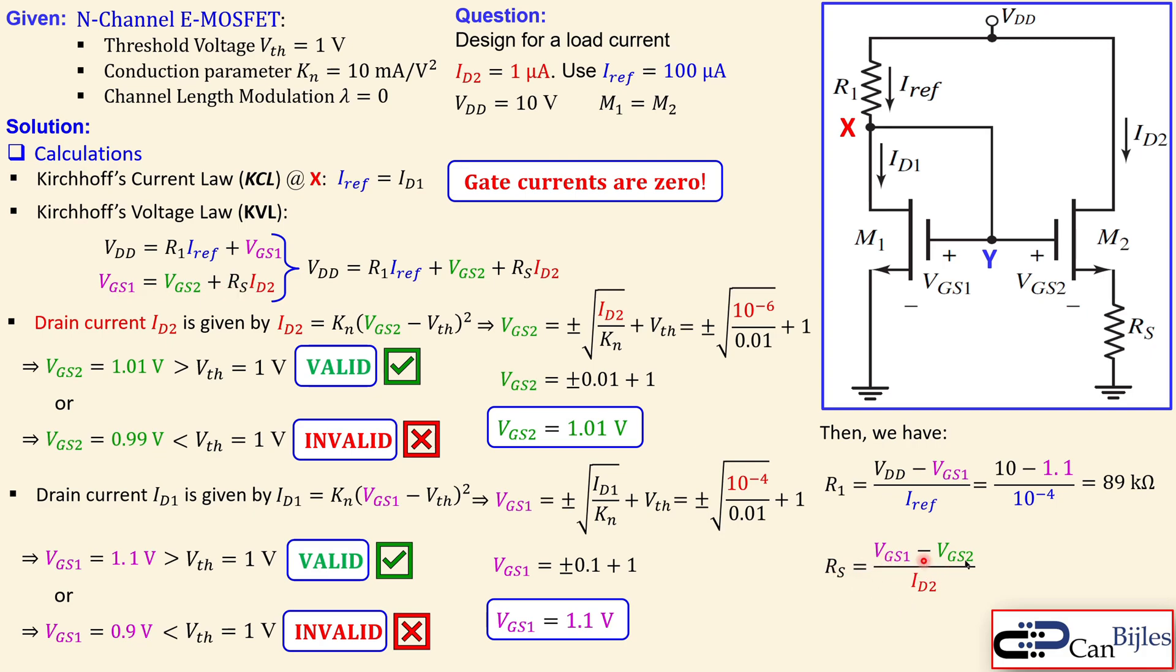RS can be calculated when you use this loop, which is actually this part. And then you do the calculations here. We need the VGS1 and VGS2. That's the reason for calculating these two. And then you also use the ID2, which is the required load current. You get here 90 kilohms.